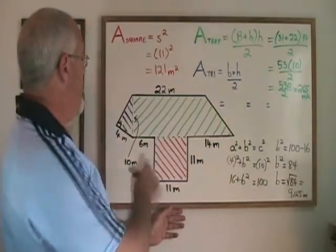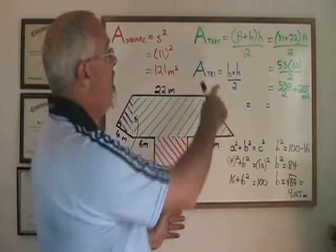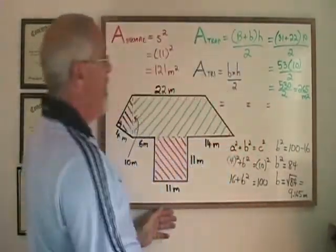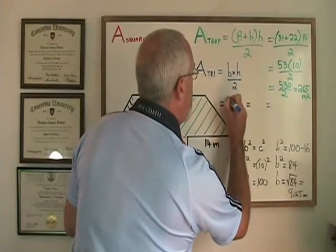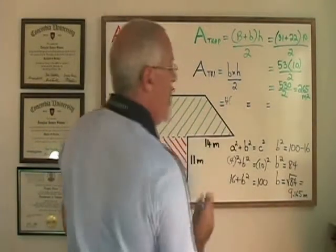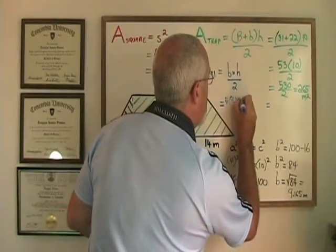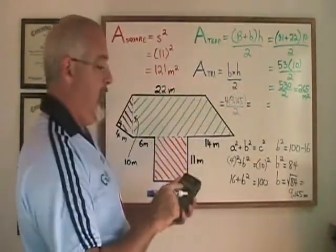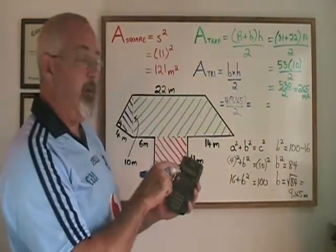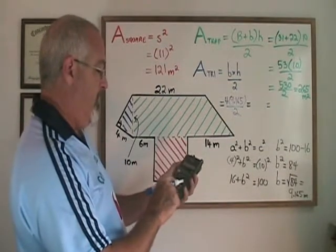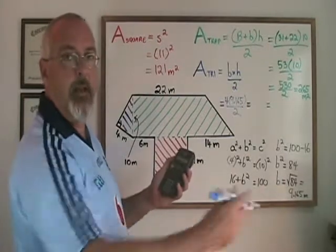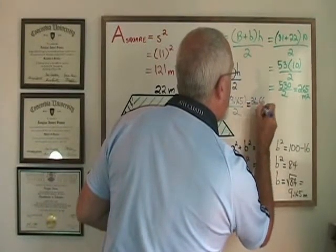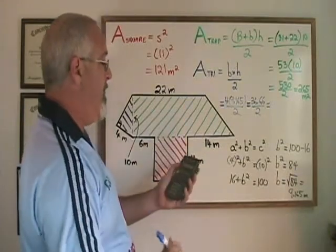Now it's time to plug the base, 4 meters, and the height, 9.165 meters, into the area formula for a triangle. The base is 4, and the height is 9.165. 4 times 9.165—I'm not using the rounded off 9.165 to do this calculation. My calculator still has the exact longer decimal, so I multiply that by 4. And I get 36.66 and again the long decimal. I will round it off to 36.66. Still has to be divided by 2, which gives me 18.33.